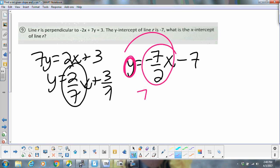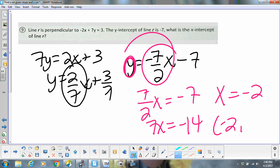And the y intercept was negative 7 here. So now we're going to rearrange. That becomes a zero. So 7 over 2 x equals negative 7. So 7x equals negative 14. And x equals negative 2 or the ordered pair (negative 2, 0).